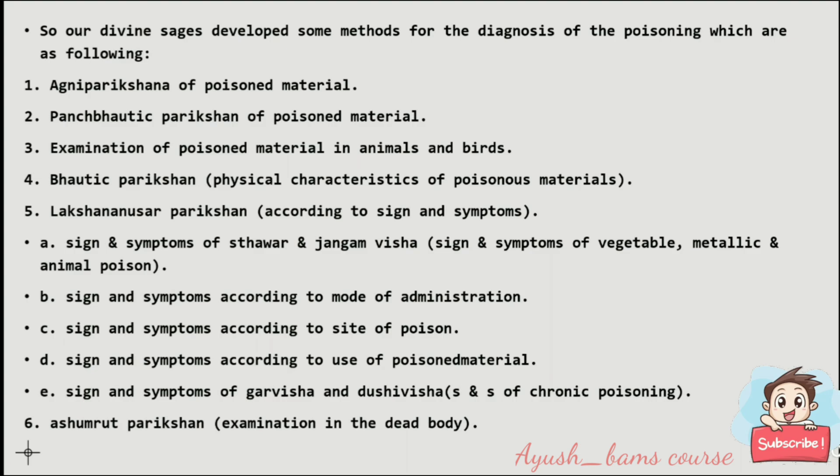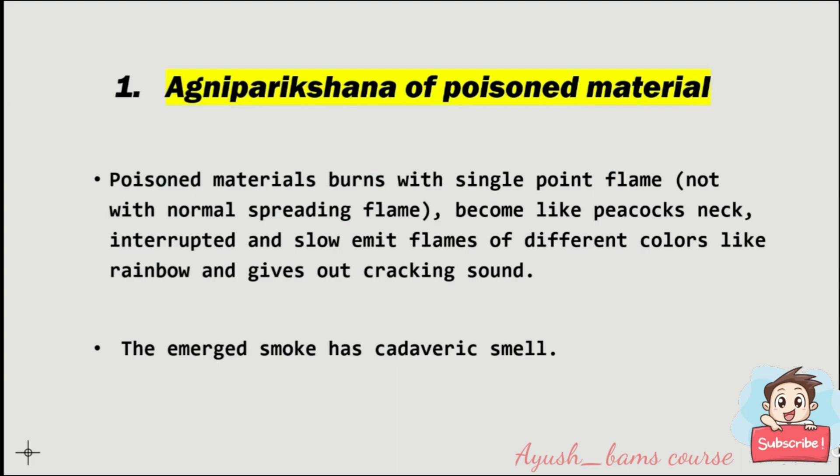Under lakshanusar parikshan, there are five types: sign and symptoms of sthavar and jangam visha, signs and symptoms according to mode of administration, signs and symptoms according to site of poison, signs and symptoms according to use of poisoned material, and signs and symptoms of garivisha and dushivisha. The sixth method is ashmarud parikshan.